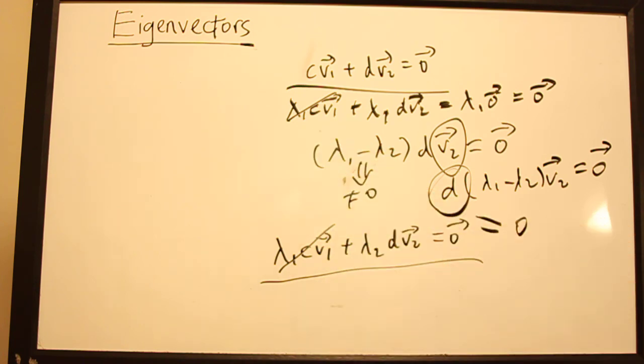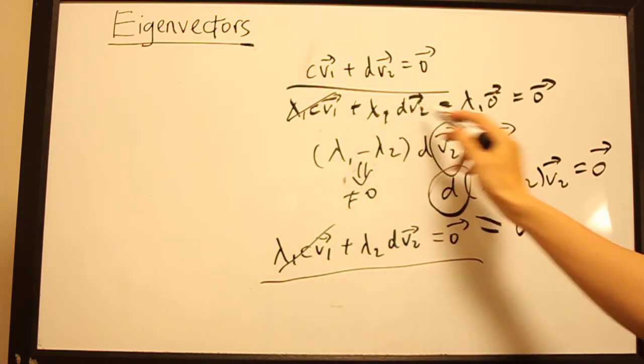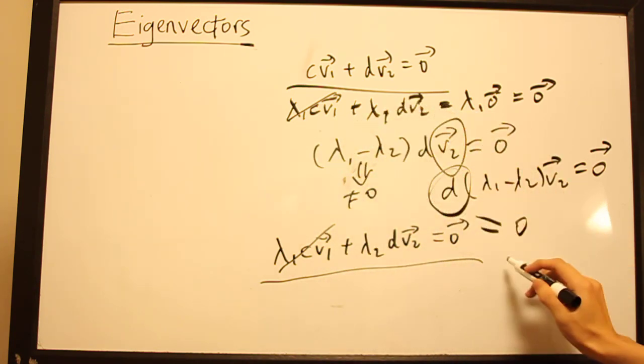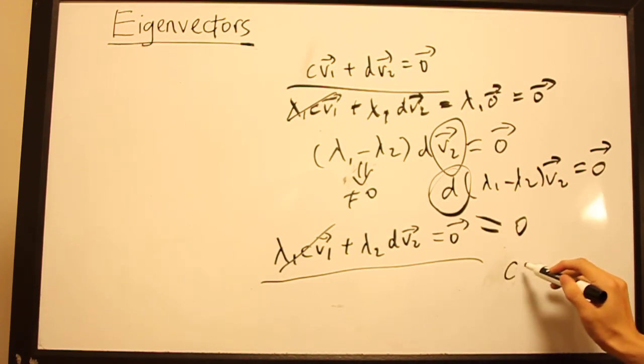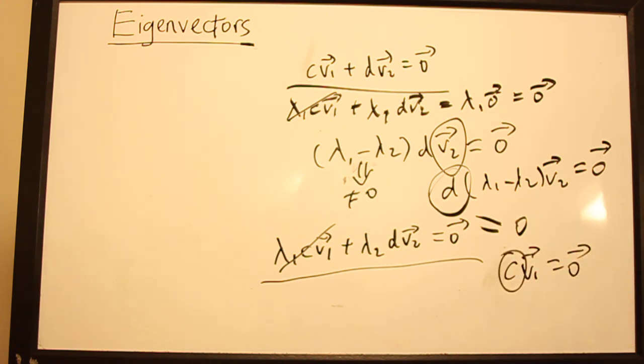And to prove that C is also 0, you can just substitute D in and you get that C·V₁ equals 0 and you conclude that this is also 0. So that's an example of a slightly more non-obvious property of eigenvectors that you might not have thought of.